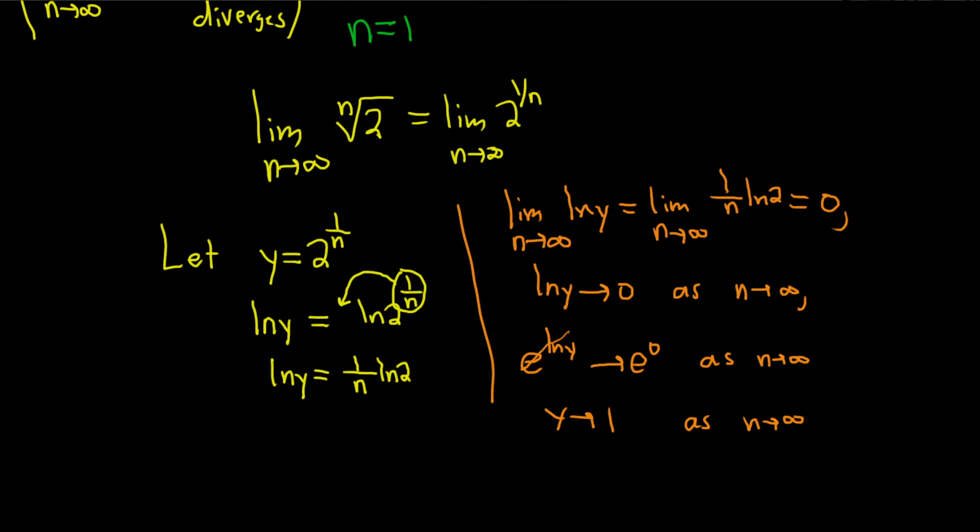You might say, well, what's y? Well, y is what we started with. y is 2 to the 1 over n. So we're basically saying that the limit as n approaches infinity of y is equal to 1.